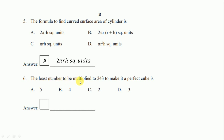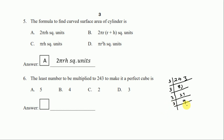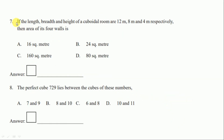Question 6: the least number to be multiplied to 243 to make it a perfect cube. Here one set of three 3s is completed for the cube root, but only two 3s are present in the other group, so one more 3 must be added to make it a perfect cube. The answer is option D, 3.